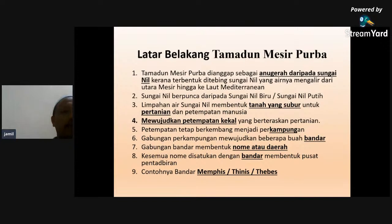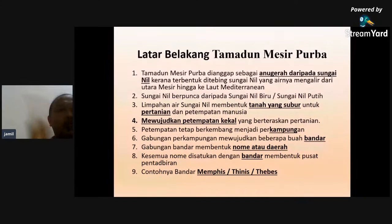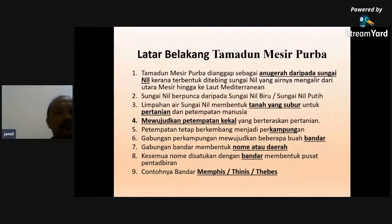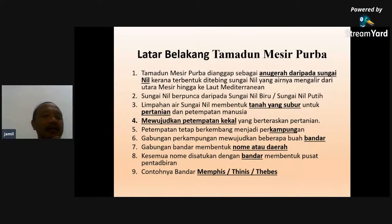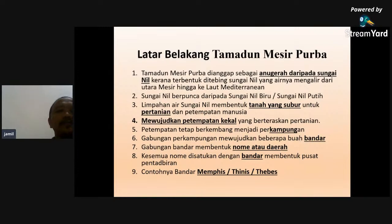Untuk latar belakang tamadun Mesir Purba dan semua tamadun, ada empat perkara yang wajib kena ingat - sama ada tamadun Mesir Purba, Mesopotamia, Indus, atau Huang Ho. Yang pertama, bila disebut tamadun, tamadun mesti dibina berkaitan dengan sungai. Tamadun Mesir Purba dibina dekat sungai apa? Sungai Nil. Kalau tamadun Indus - sungai Indus. Tamadun Huang Ho - sungai Huang Ho. Tamadun Mesopotamia - sungai Tigris dan Euphratis. Latar belakang pertama yang wajib ingat: terletak dekat sungai. Tamadun Mesir Purba terletak dekat tebing sungai Nil.